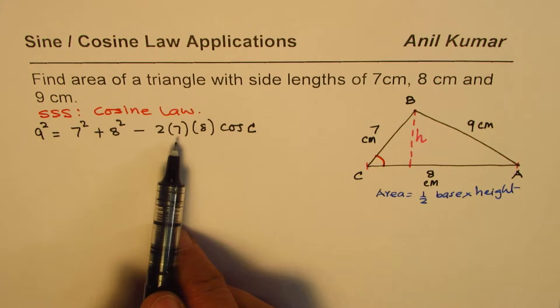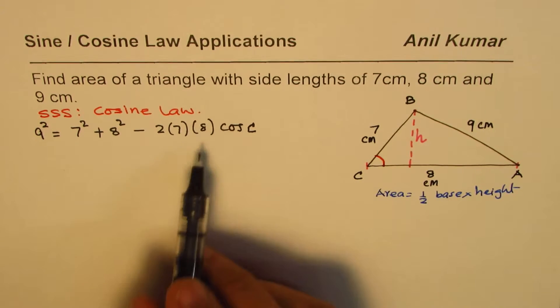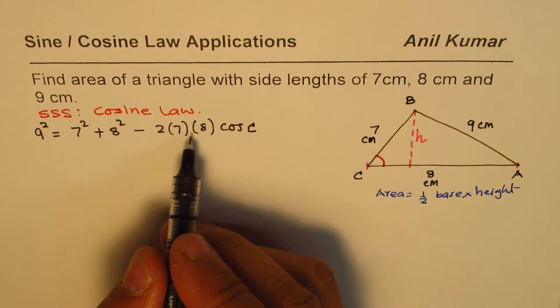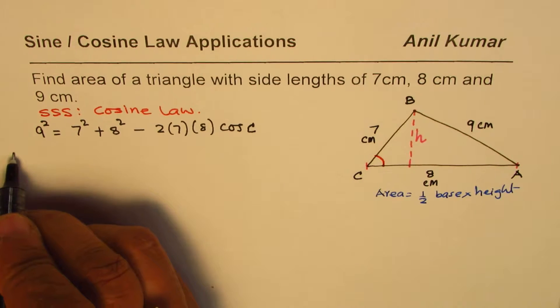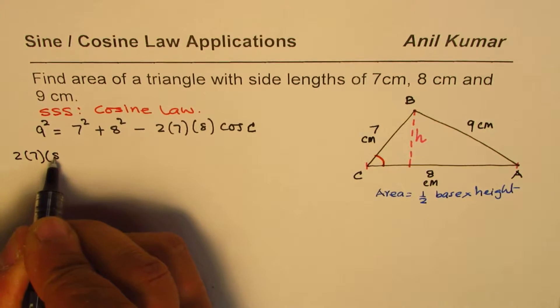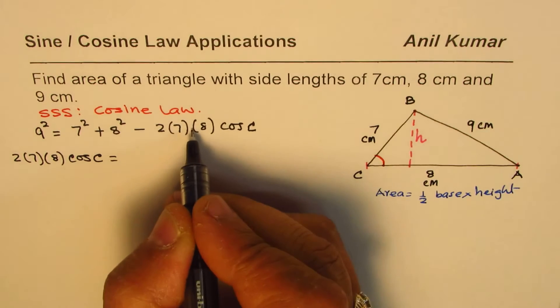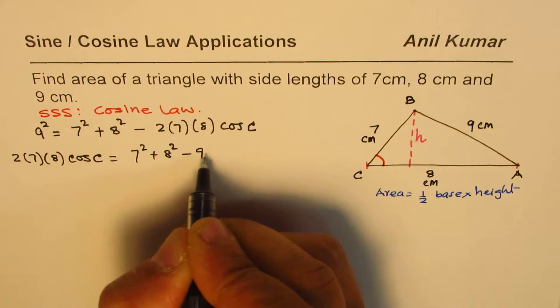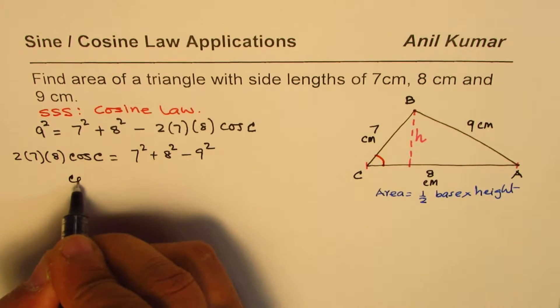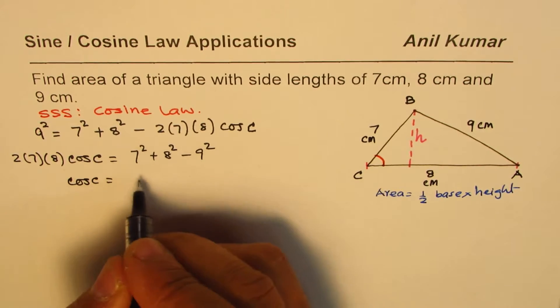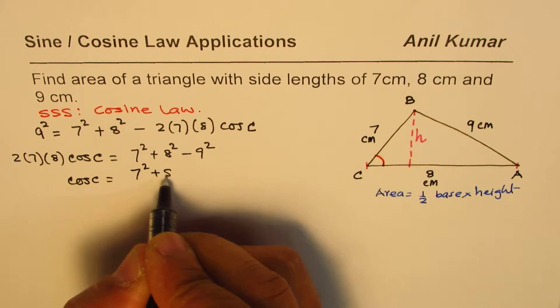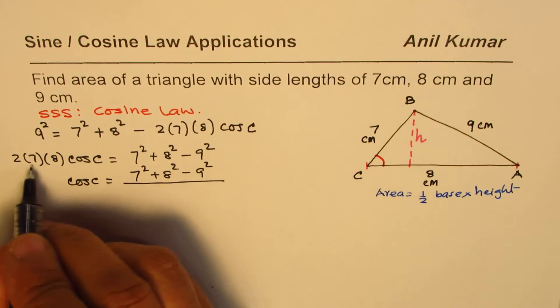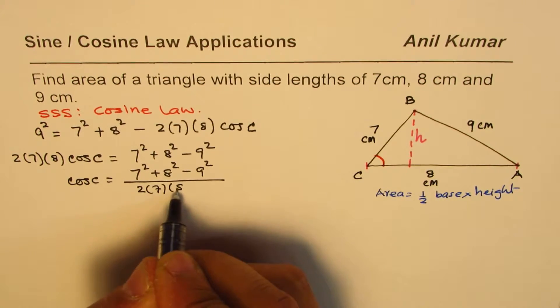Now we have to find what the angle is, so we'll rearrange. Let me write this as 2(7)(8)cos C = 7² + 8² - 9². So we say cos C equals all this. We'll use calculator later to calculate the values. Let me derive the formula in steps, divided by 2(7)(8). Does it make sense?